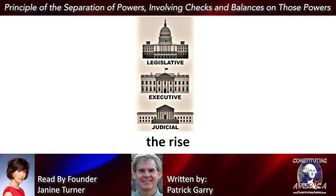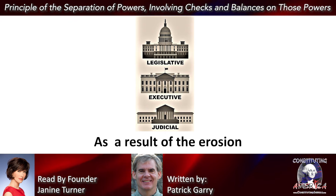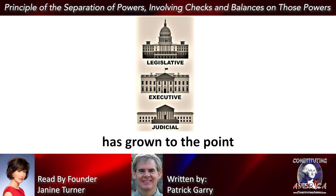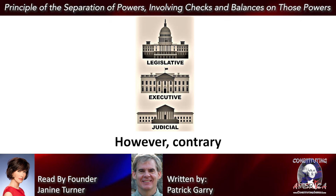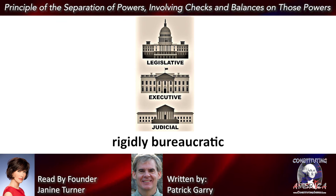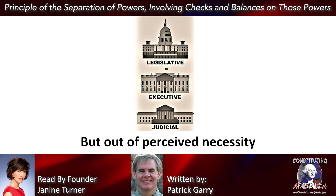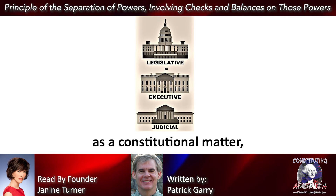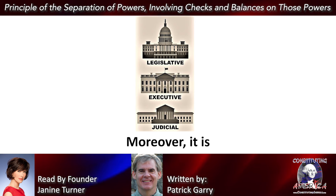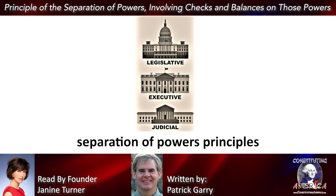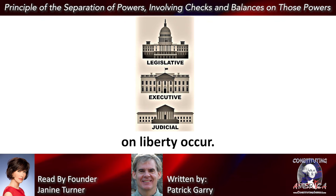Not surprisingly, the rise of the administrative state meant the corresponding decline of the separation of powers principle. As a result of the erosion of separation of powers during the New Deal period, the administrative state has grown to the point of being called the fourth branch of government. However, contrary to the idealistic hopes of the New Dealers, agencies are often rigidly bureaucratic and cravenly political. But out of perceived necessity for meeting the demands of modern society, the courts have accepted, as a constitutional matter, the administrative state. Moreover, it is perhaps not surprising that the more the administrative state contradicts separation of powers principles, the more abuses of power and infringements on liberty occur.